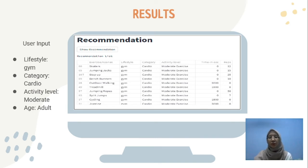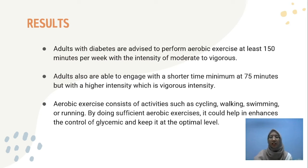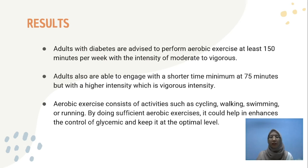The time and repetitions are also shown in the list, where the times shown are 3600 seconds and 1800 seconds, along with the repetitions that need to be done by the user. Based on the results, they are compared to the guideline for diabetes patients. The guideline states that adults with diabetes are advised to perform aerobic exercise at least 150 minutes per week with moderate to vigorous intensity, or a minimum of 75 minutes at vigorous intensity. Aerobic exercises include activities such as cycling, walking, swimming, or running, and doing sufficient aerobic exercise could help enhance glycemic control and keep it at the optimal level.